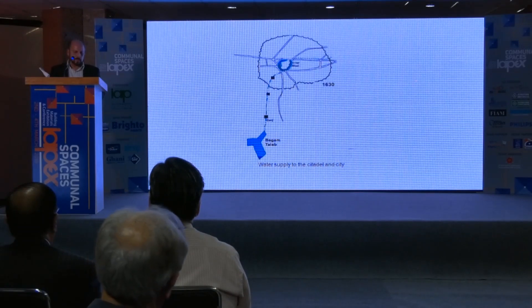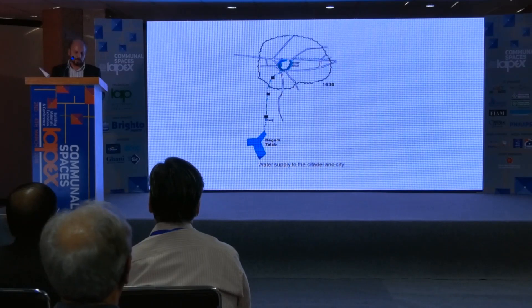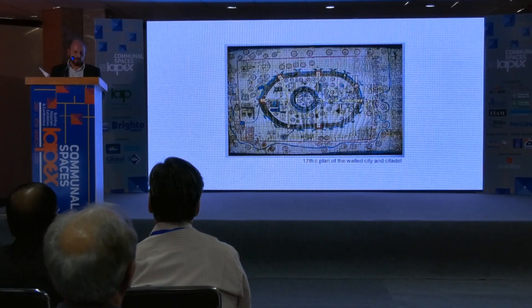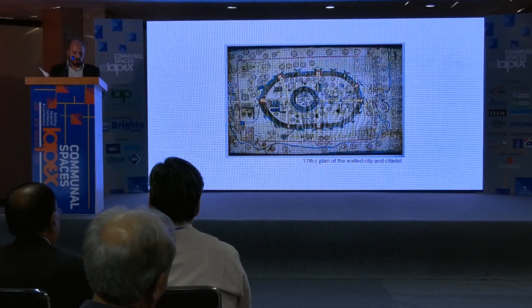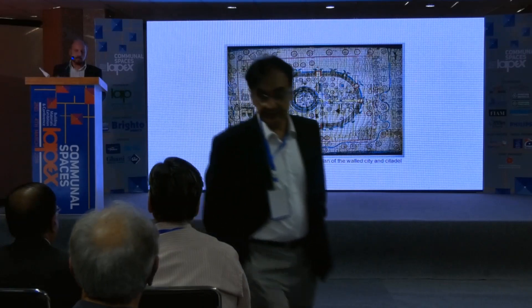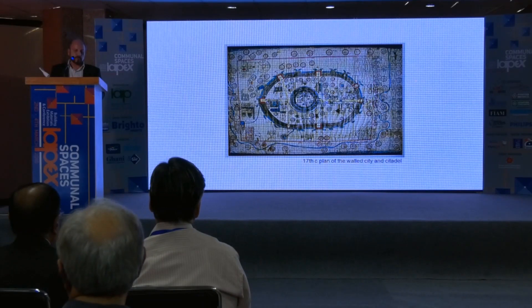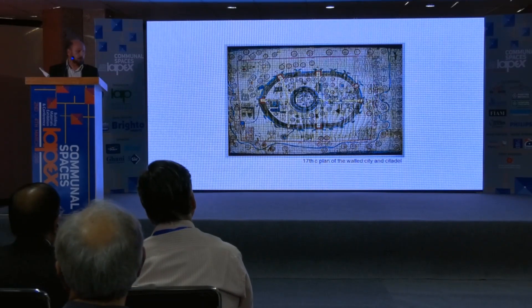Bijapur's Islamic heritage sites are made up of both secular and religious buildings. These may be grouped into four categories. The first is forts, bastions and watchtowers. The citadel and the surrounding city, each with its surrounding moat, gates and walls, with an outer circuit of over six miles enclosing 1,300 acres, are attractions for local and international tourists.